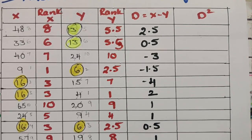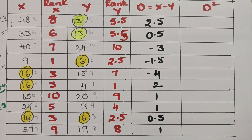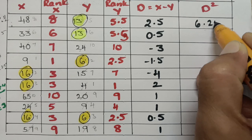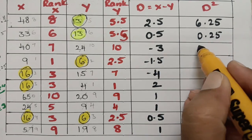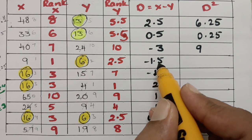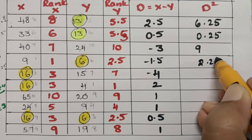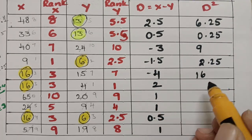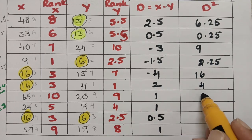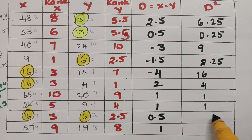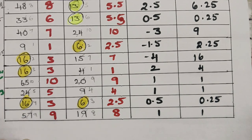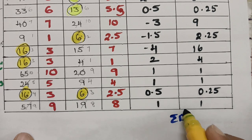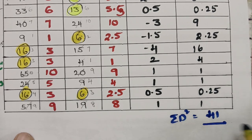We have to make the squares of these d values. That is: 2.5² = 6.25, 0.5² = 0.25, (−3)² = 9, (−1.5)² = 2.25, (−4)² = 16, 2² = 4, 1² = 1, 1² = 1, 0.5² = 0.25, and 1² = 1. After adding all d² values, sigma d² equals 41.